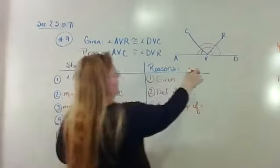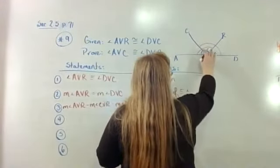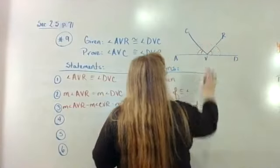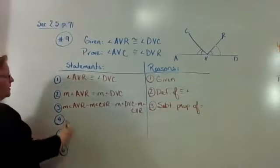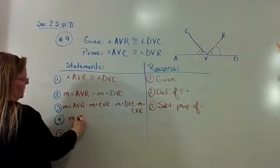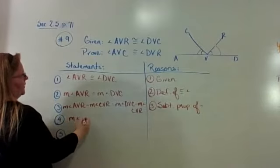So basically I took the big one and separated out this little one right there. Took it out just like we did in the other one. And then I'm going to simplify by saying what's left, that gives me the measure of angle AVC is equal to the measure of angle DVR.